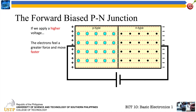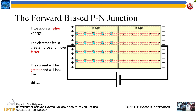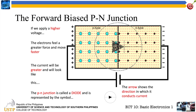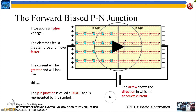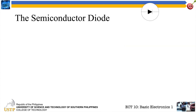The p-n junction, from basic electronics, is what we call a diode. Remember the placement of our diodes — you have the line, which is the negative side, and the side where the arrow points, which is your positive. Current flows from negative to positive. That is our semiconductor diode. A semiconductor diode is a p-n junction.